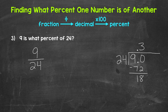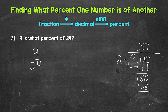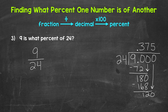We don't have a clean-cut zero, so we bring down another zero. Now we have 180. 180 divided by 24 — how many 24s in 180? That's 7, which gets us to 168. Multiply: 7 times 24 is 168. Subtract: 180 minus 168 is 12. Still no clean-cut zero, so we bring down another zero. Now we have 120. 120 divided by 24 — how many 24s in 120? That's 5, and that hits 120 exactly. Multiply: 5 times 24 is 120. Subtract: 120 minus 120 is 0.